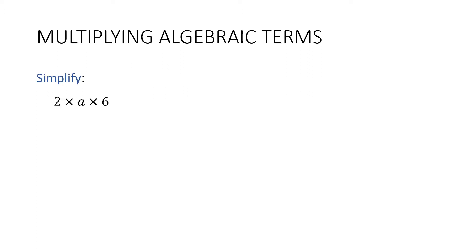So let's simplify 2 times a times 6. Remember, simplify means make simpler. We can't just take the times signs out. Do you know what's wrong with that one? The 6 has got to come out the front. So instead, we're going to multiply the 2 by the 6, which gives us 12, and put the a on the end. 12a.